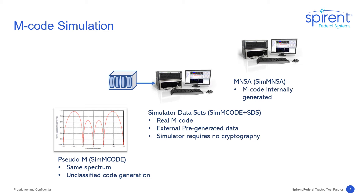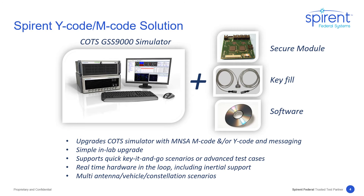The SIM-MENSA product was released and granted security approval in 2018. The basic GSS 9000 is an unclassified commercial off-the-shelf product. With the SIM-MENSA and SIM-SAS products that upgrade to M and Y-code, the simulator can quickly be upgraded for restricted signal processing. The upgrade, which is easily done on-site, includes the addition of a security module, a key-fill port, and software.